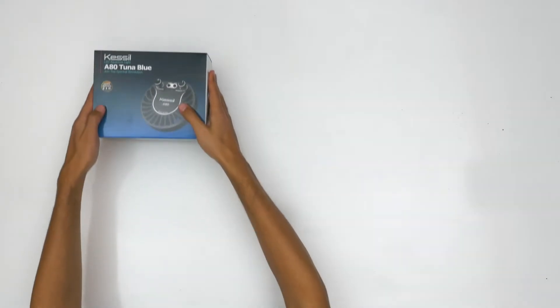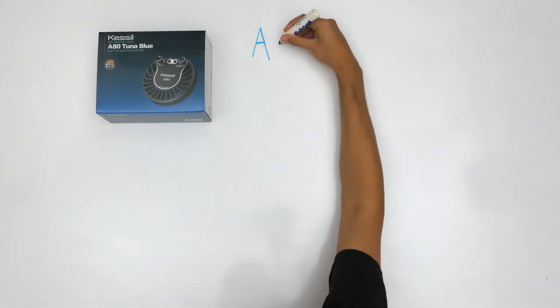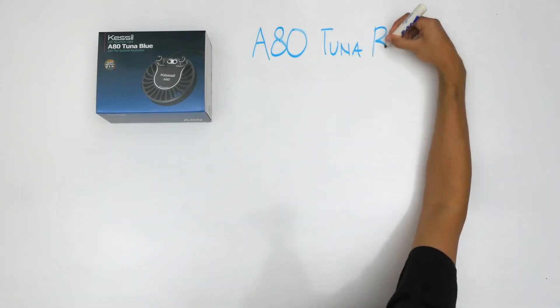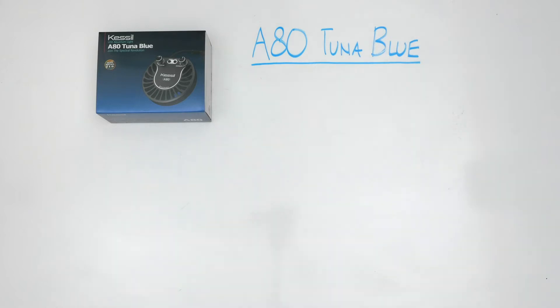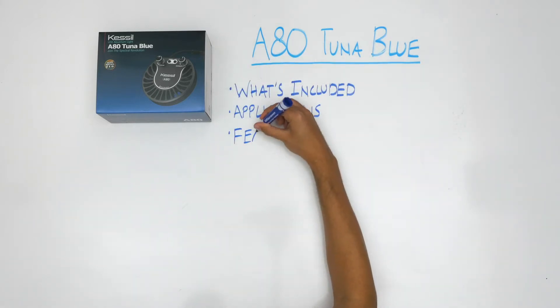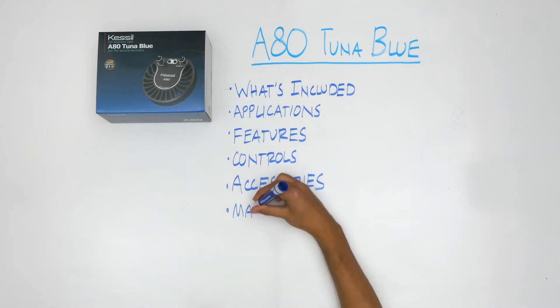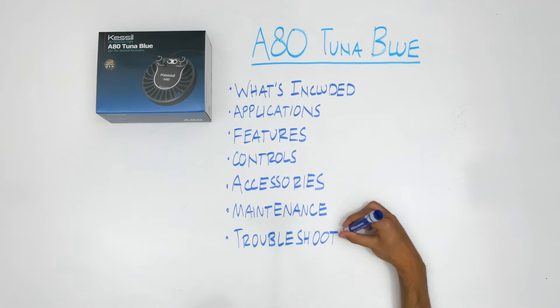The affordable and efficient Kessel A80 Tuna Blue is one of our most popular lights. In this video, we'll take a closer look at the A80 Tuna Blue, learning about what's included in the box, the applications of the light, all the different features, the external controls, compatible accessories, basic maintenance, and troubleshooting. To jump directly to any of these sections, use the links provided in the description.